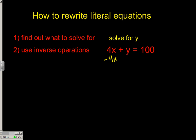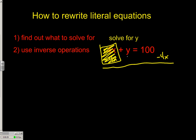Let's get the positive 4x out of the way by subtracting 4x on both sides. So 4x minus 4x is 0. We have a positive 1y left over, so we'll pull that down. Now take a look at this — if these are not like terms, you just pull them straight down: 100, and we've subtracted 4x, so let's just put minus 4x.